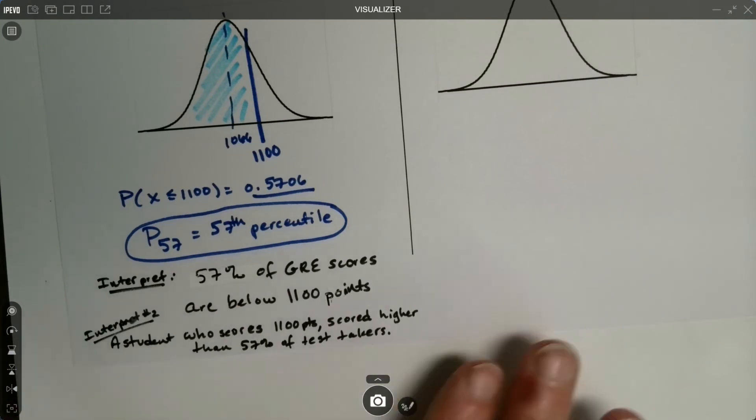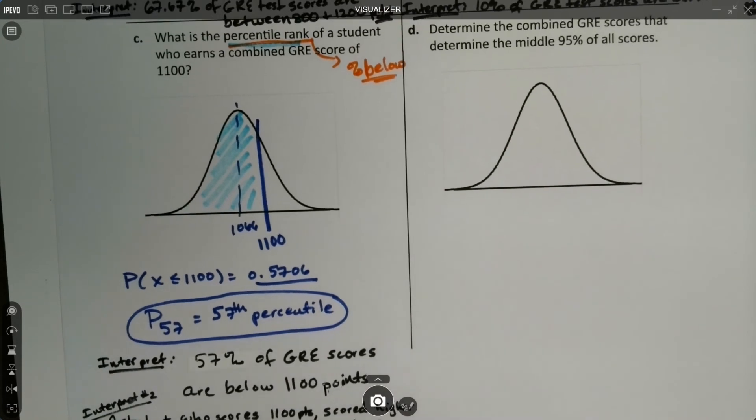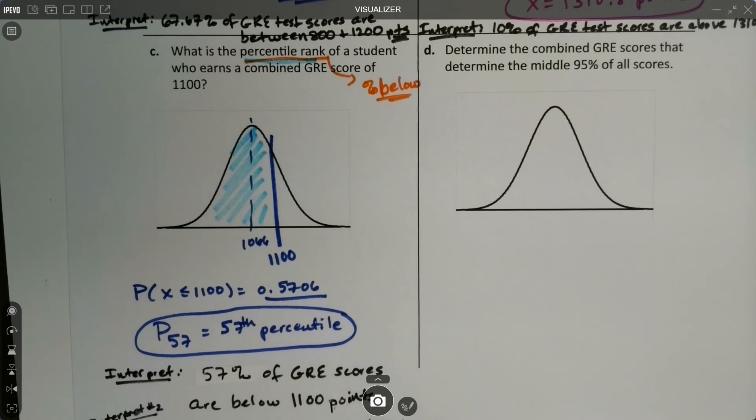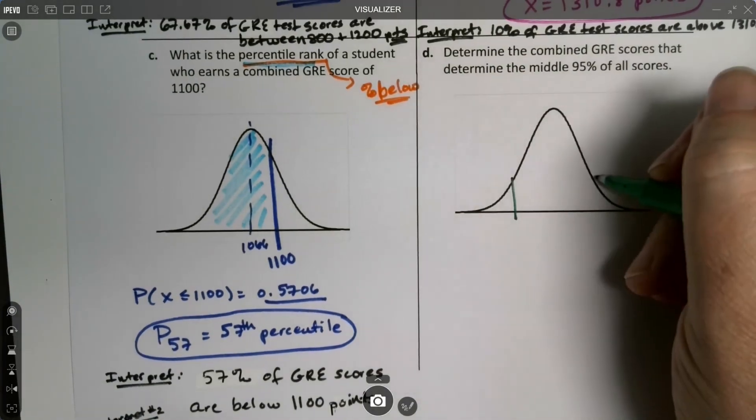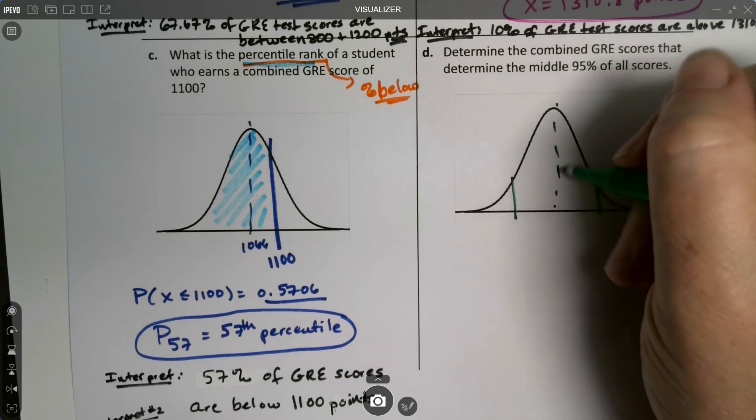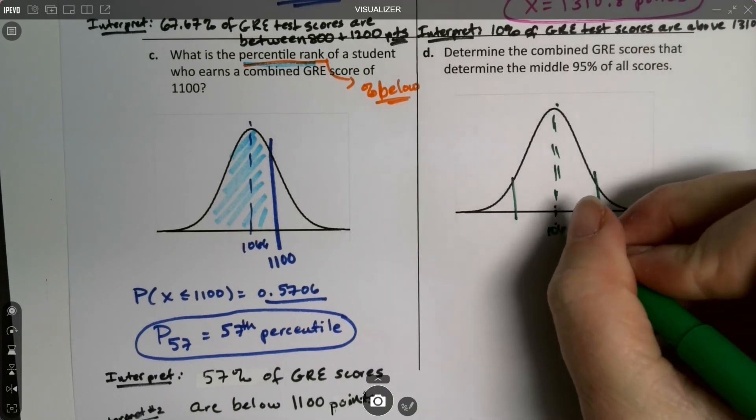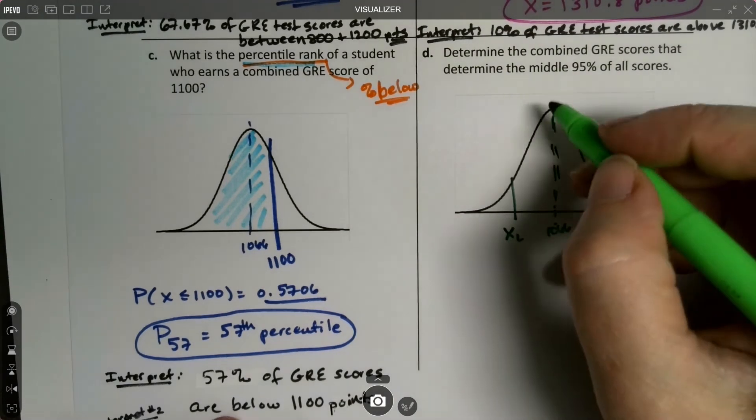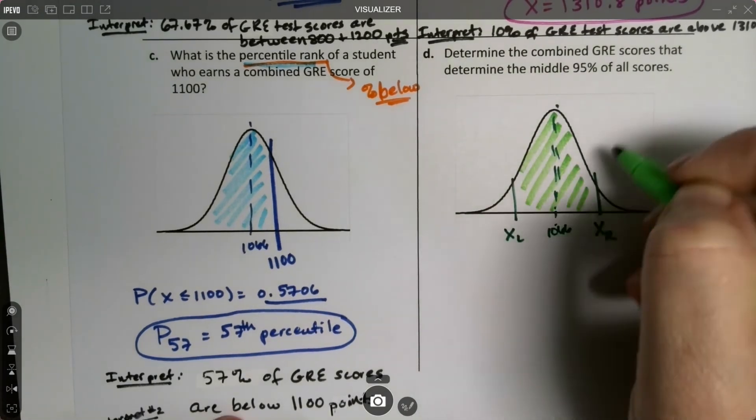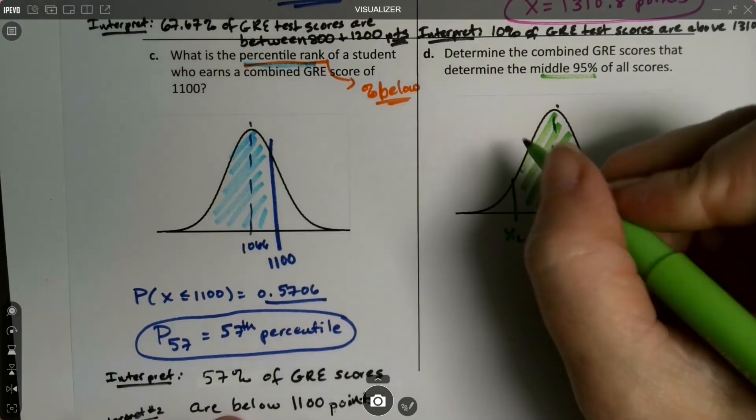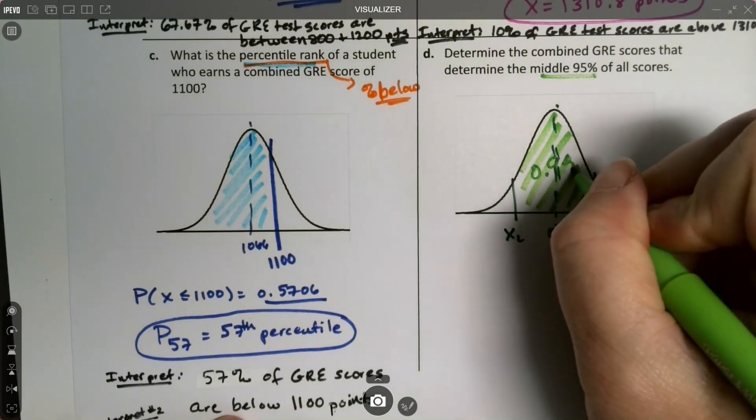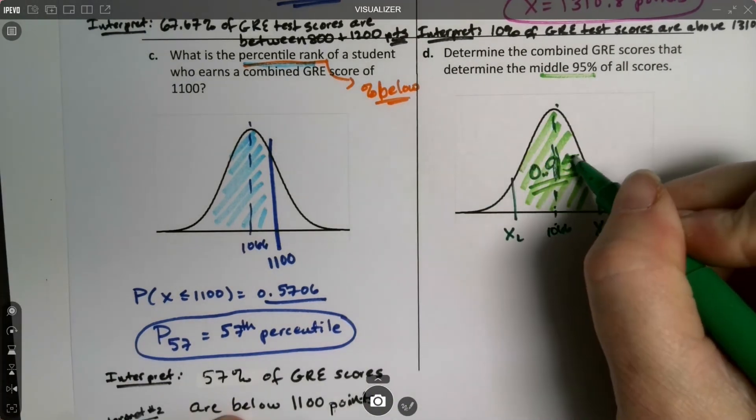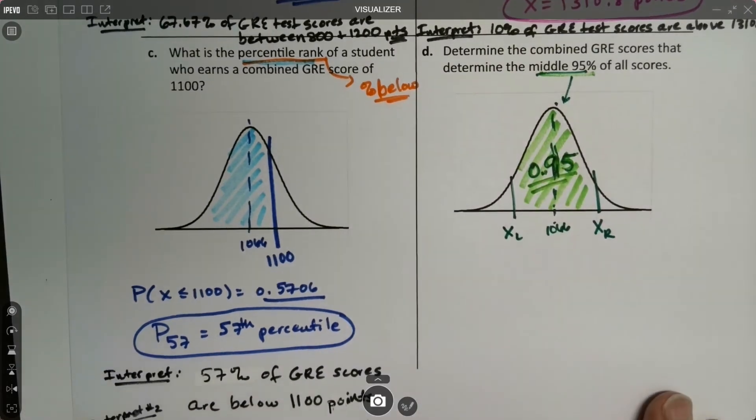Last but not least, determine the combined GRE scores that determine the middle 95%. Let's think. We know that it's going to be symmetric. The center line is 1066. What I'm looking for is there's an X value here and an X value here. And they're going to be symmetric. And the middle is going to be worth 95%. So that central area is 0.95.